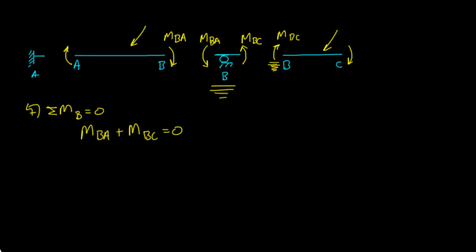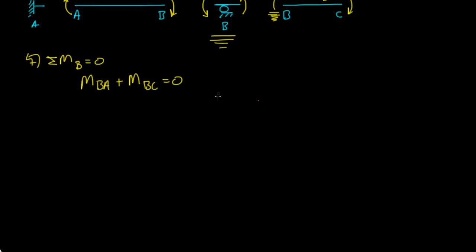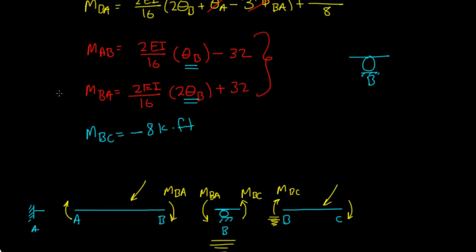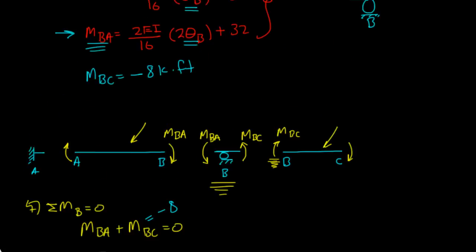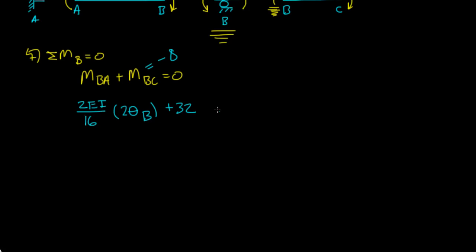And we know, we actually figured out what MBC was, right? It's negative 8. So this is actually equal to negative 8. And you have the equation MBA. So we're looking at this, right? MBA. MBA was equal to 2EI over L. Oh, I'm sorry, L was, let me erase that. L was 16, right? And it was 2 theta B plus 32. Let me just make sure that's right. Yeah, it should be right. Plus MBC, and that was negative 8, and that's equal to zero, right?